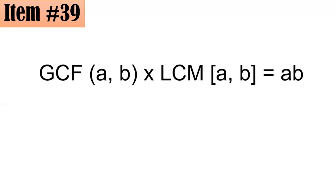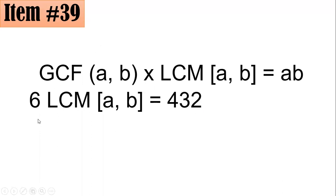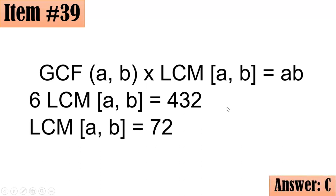To solve this, remember that for two natural numbers, GCF times LCM equals the product of the two numbers. Since the GCF is 6 and the product is 432, we have 6 times LCM equals 432. Dividing both sides by 6 gives the LCM as 72, letter C.